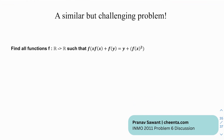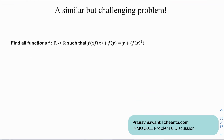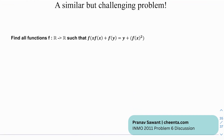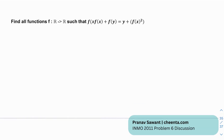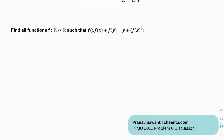Here's a similar but challenging problem: find all functions f: ℝ → ℝ such that f(x · f(x + f(y))) = y + f(x)². Again, there may be a pointwise trap, so it's important not only to find the solutions but also to prove that f is not piecewise. Let me know in the comments if you make any progress!